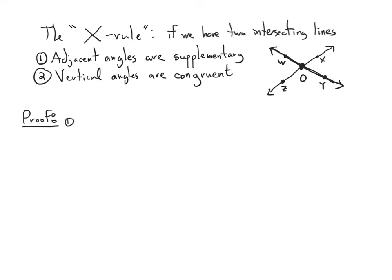Basically, we have a straight line here. Z, O, and X all lie on this straight line. Since these points lie on a straight line, angle ZOX is a straight angle — 180 degrees. We know that. We also know that W is a point on the interior of that angle, so I know that angles ZOW and WOX sum to whatever ZOX is — which is 180 degrees — and that's the definition of being supplementary.